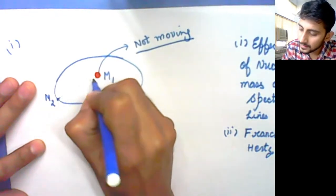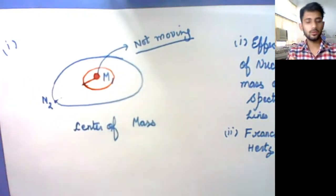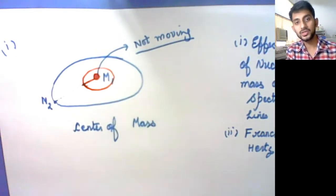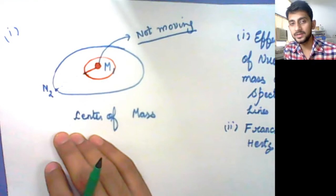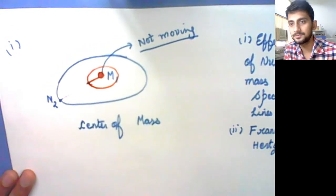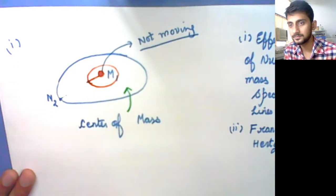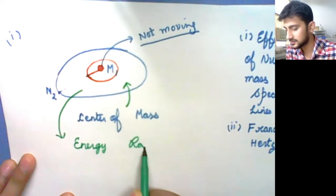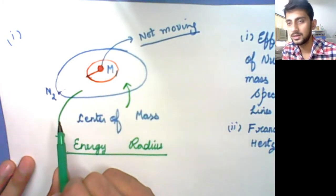There is a point — the center of mass — around which both things will revolve or be in motion. In the case of the nucleus, the proton mass is so large that the center of mass lies very close to the nucleus itself. This is why we don't see major changes. Otherwise, there should be a correction because of the nuclear masses. Now both things will change — the energy as well as the radius — because we now have to consider the center of mass and the reduced mass.